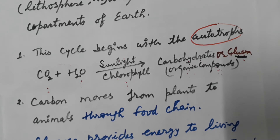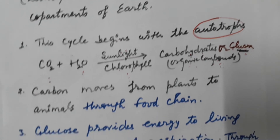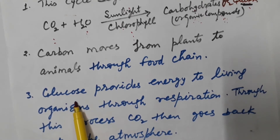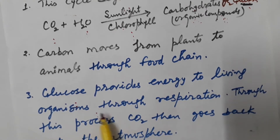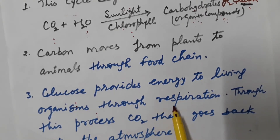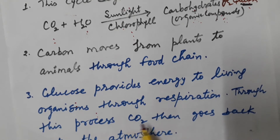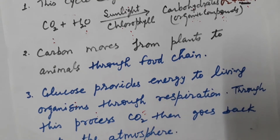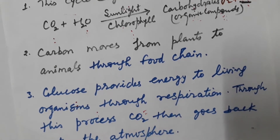Inside the body of living organisms, this food material provides energy by the process of cellular respiration. Oxidation of glucose takes place inside the living cell — this is called cellular respiration. In this process, energy is released which is utilized by the living organism for their daily activities, and CO2 is also released which goes back into the environment.